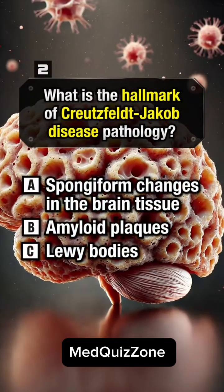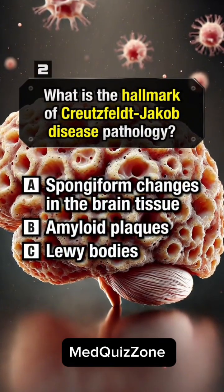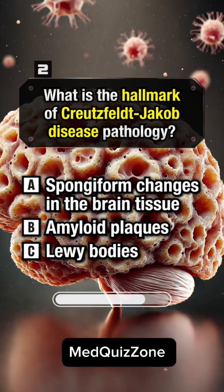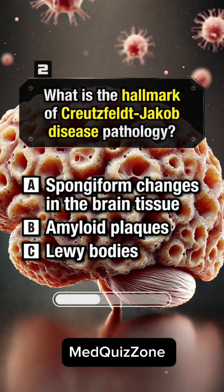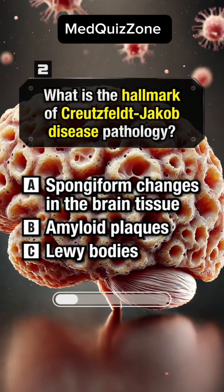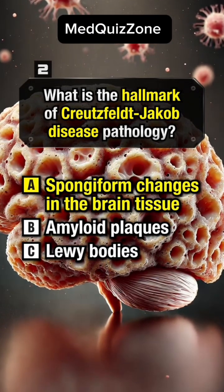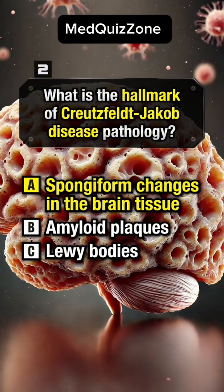What is the hallmark of Creutzfeldt-Jakob disease pathology? Answer A: Spongiform changes in the brain tissue.